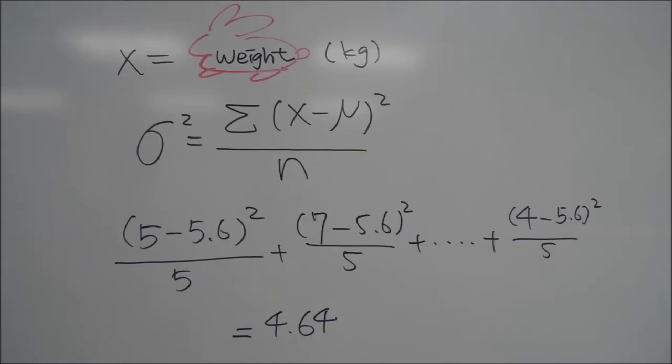To find the variance, we take the sum of difference in the measurement of a given weight by the sample mean squared divided by the sample size. For this data set, with a sample mean of 5.6, we take the measurement of a given weight, 5, and subtract the sample mean from it. We then square that value, 0.6, and divide it by the sample size, which is 5.